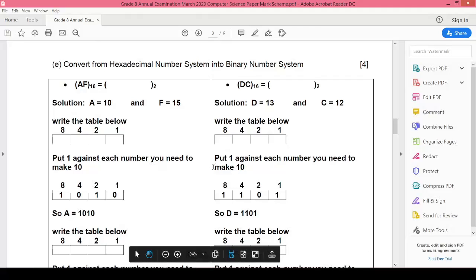We are given the hexa number AF16, and we have to convert it into binary number system. We have practiced this many times in the classroom. What you are supposed to do is we have A and we have F. A means 10 and F means 15.